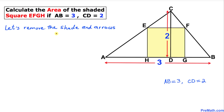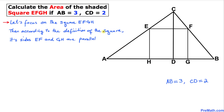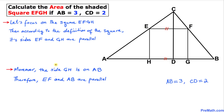Let's go ahead and remove the shade and the arrows from this figure. Now let's focus on square EFGH. According to the definition of a square, its sides EF and GH are parallel. We also know that side GH is on line segment AB, so therefore side EF and line segment AB are going to be parallel as well.